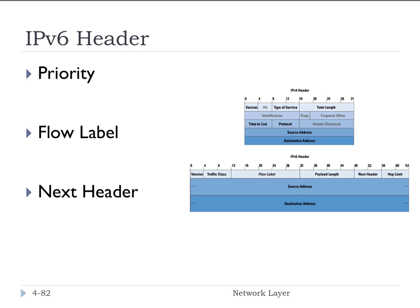The flow label is used to identify datagrams in the same flow. This idea of a flow is not that well-defined, but at least that capability is there.